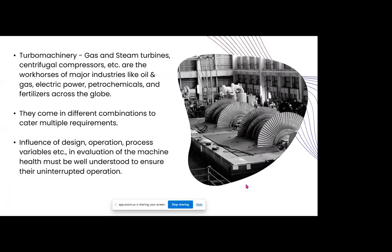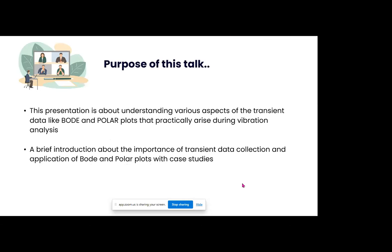Bode and polar plots come under the transient data collection plots and are mostly applied for turbomachinery — typically gas and steam turbines and centrifugal compressors — which are the major workhorses in oil and gas, electrical power, petrochemical, and fertilizer industries across the globe. They are really critical machines and the influence of design, operation, and process variables on machine health must be well understood to ensure uninterrupted operation.